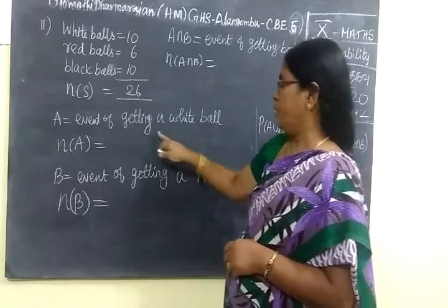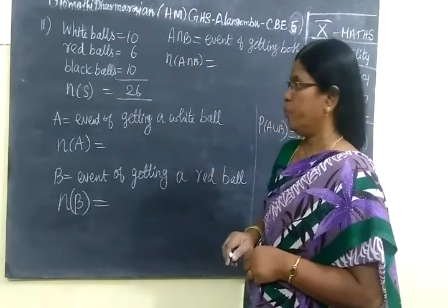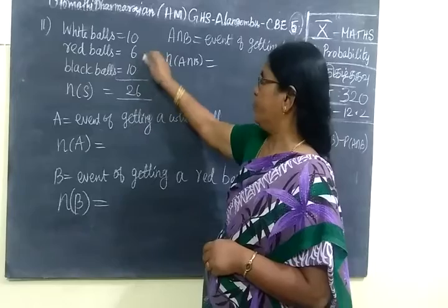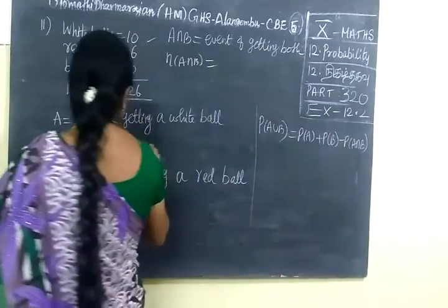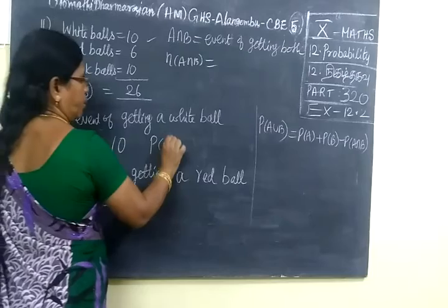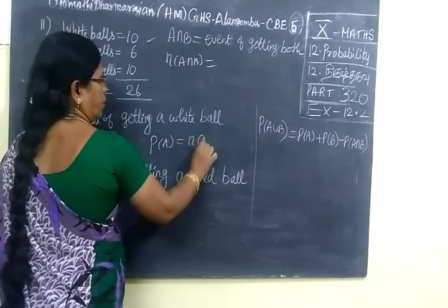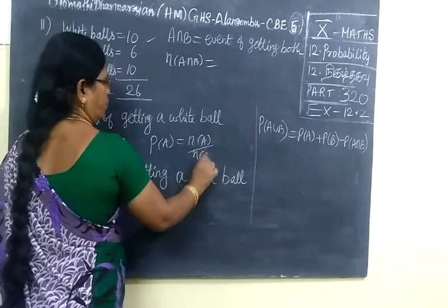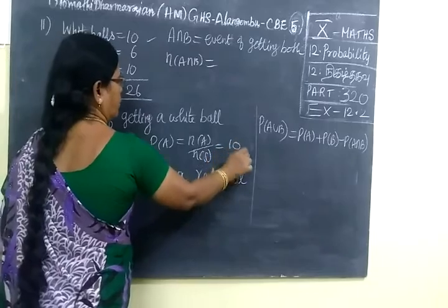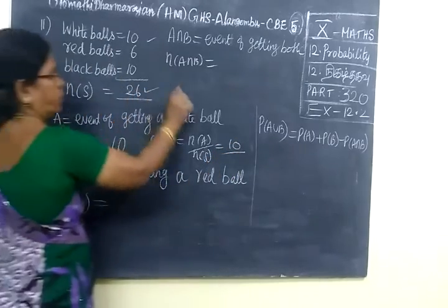We want to get the event of getting a white ball. White balls are 10, so n(A) = 10. Therefore P(A) = n(A)/N = 10 by 26, where 26 is the total number of balls.